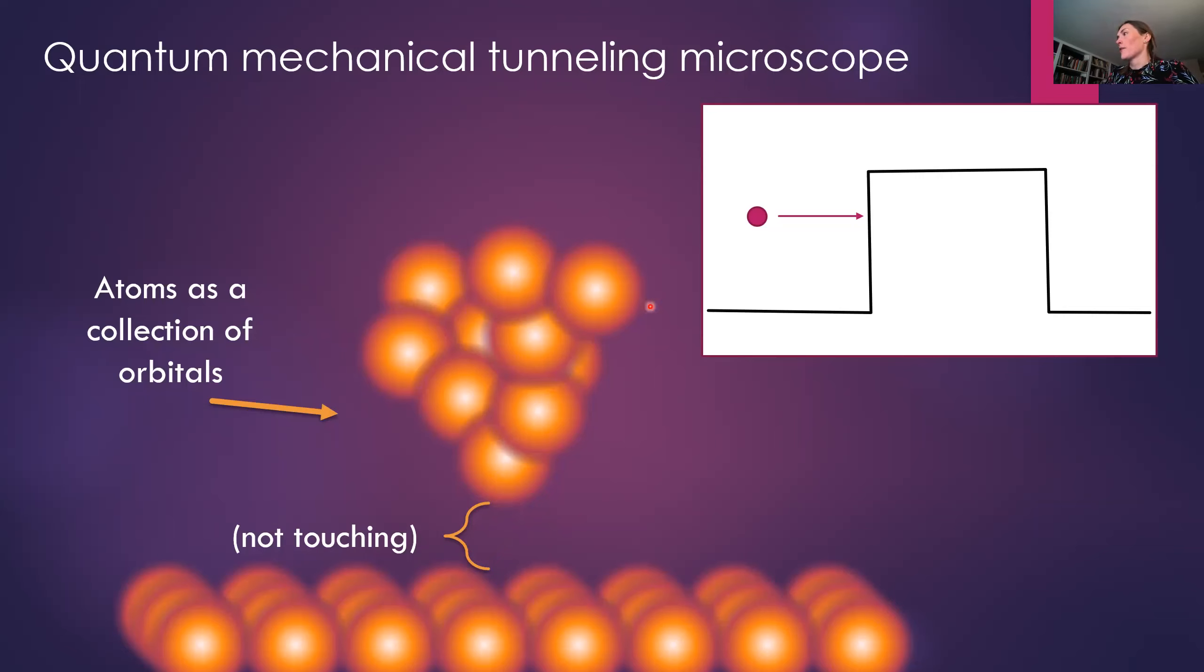So if we thought about the electron as like a classical ball, then this is a gap that the electron with this amount of energy can't get across. This looks like a barrier to the electron. It's stuck in the atom. And so it will bounce off this wall. So classically, we can't explain how this works.